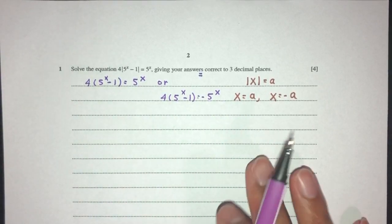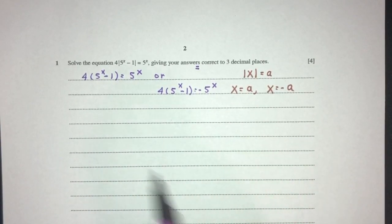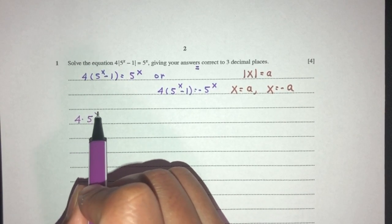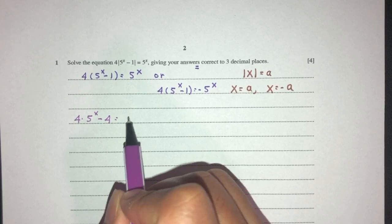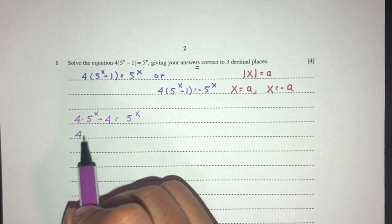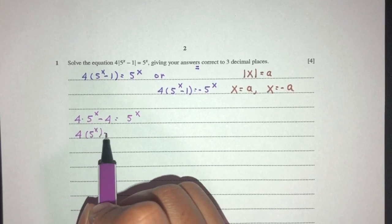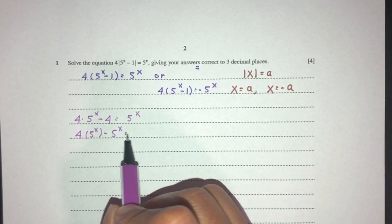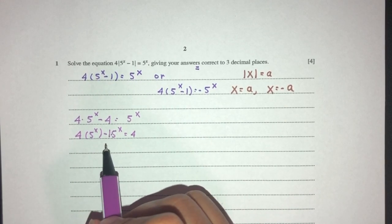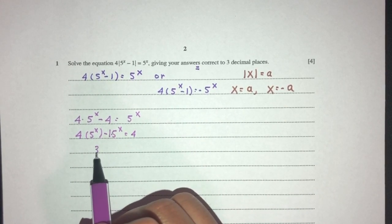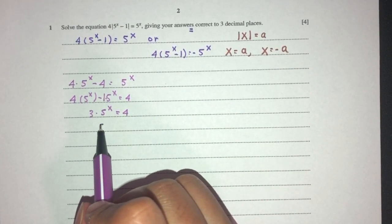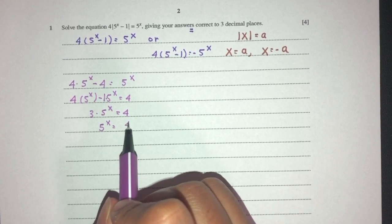For the first equation here, let's try to make x the subject. So here you expand, you have 4 times 5^x minus 4 is equal to 5^x. Now send all the 5^x to one side, you will have 4(5^x) minus 5^x equal to 4. Now 4 minus 1, that should be 3. So 3 times 5^x is the value of 4, therefore I can conclude 5^x is the value of 4 over 3.